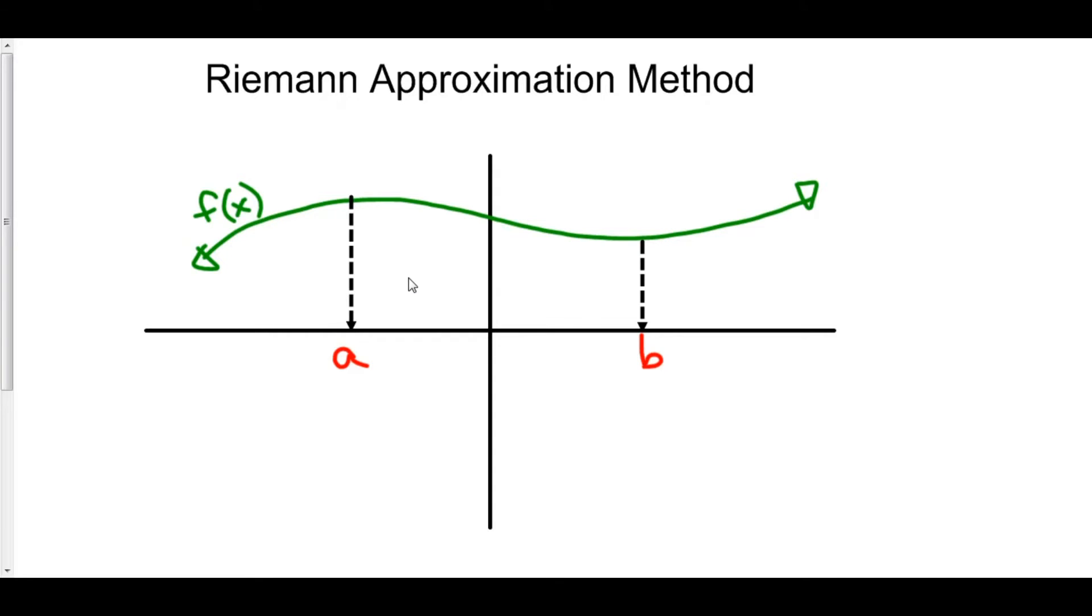In the 19th century, a mathematician by the name of Georg Riemann did just that. He figured out a method to approximate the area beneath the curve. And this is called the Riemann approximation method.